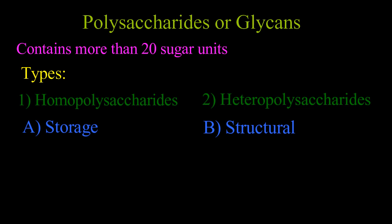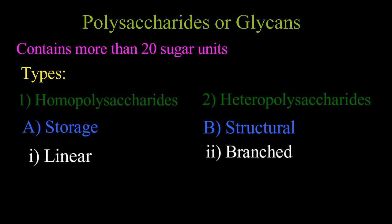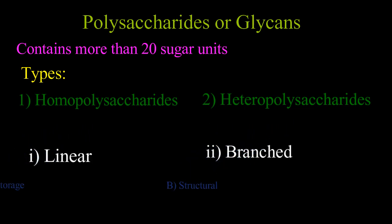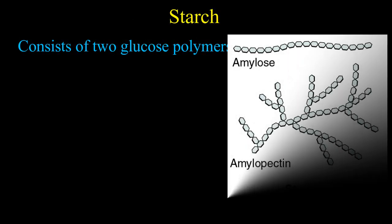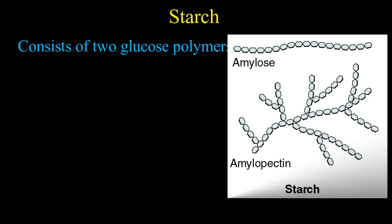act to support extracellular matrix in animals. They may be linear, as present in cellulose, or branched, as present in glycogen. Starch consists of two glucose polymers: amylose and amylopectin. Amylose is a long unbranched polymer